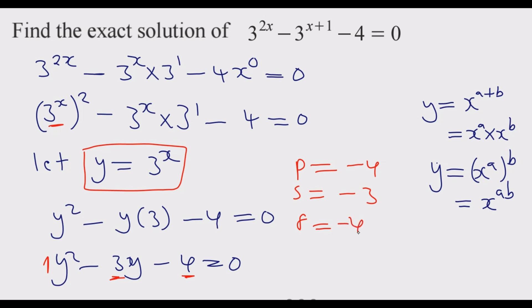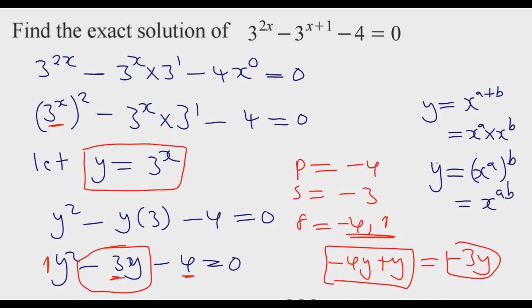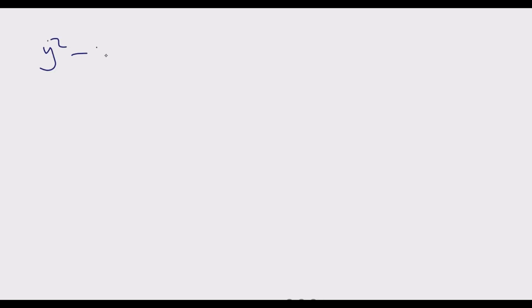Negative 4 and 1, because 1 times negative 4 is negative 4, and 1 plus negative 4 is negative 3. Once we know these values, we substitute. Whenever we have negative 3y, we substitute with negative 4y plus y, which is the same as negative 3y.